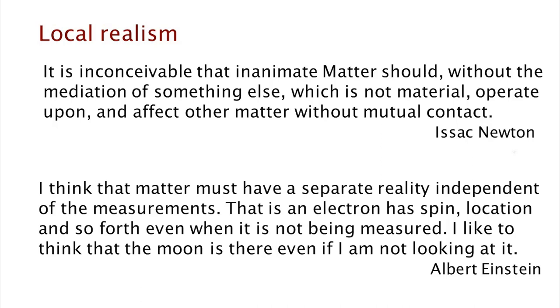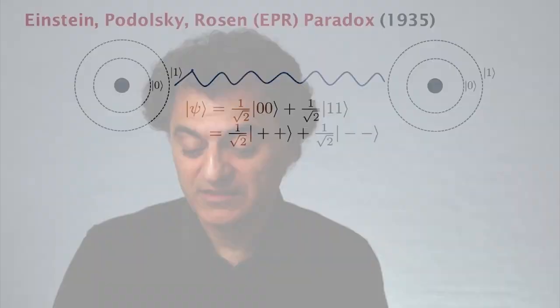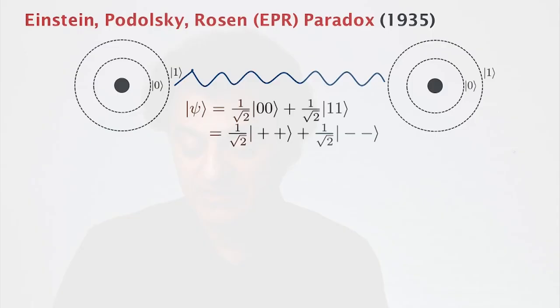The second concept is one of realism. Let's see what Einstein himself had to say about realism. He says, 'I think that matter must have a separate reality independent of the measurements. That is, an electron has spin, location, and so forth, even when it's not being measured. I like to think that the moon is there even if I am not looking at it.' This is getting at the heart of quantum mechanics, where one speaks about a system being in superposition when one's not looking at it. It's only when you measure the state that the physical quantity of interest actually appears. This is what Einstein found very troubling and problematic.